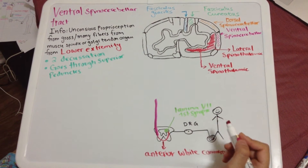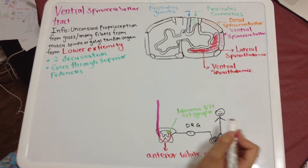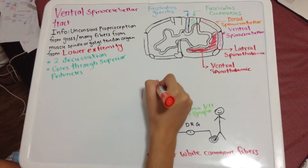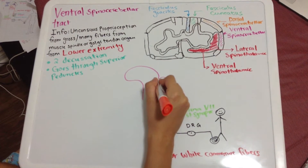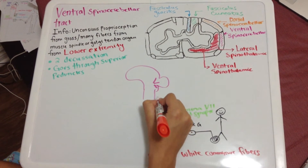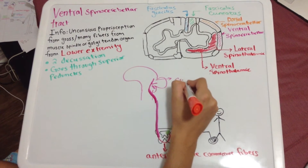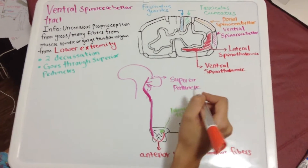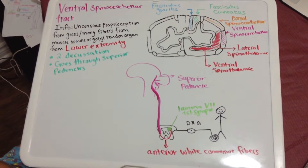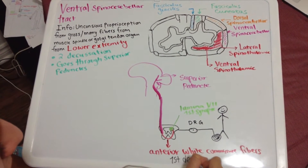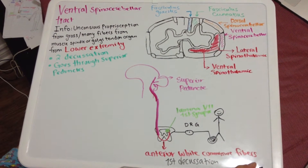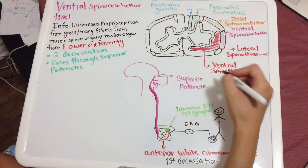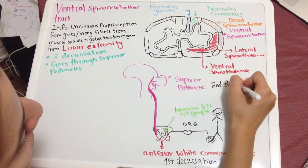After decussating, the fibers enter the ventral spinocerebellar pathway and ascend up through the medulla, entering the cerebellum via the superior peduncles. Once inside the cerebellum through the superior peduncles, the fibers undergo their second decussation.